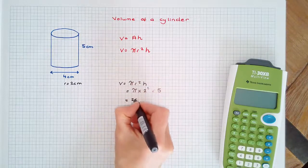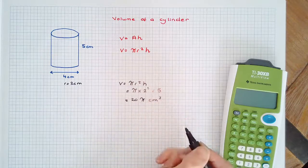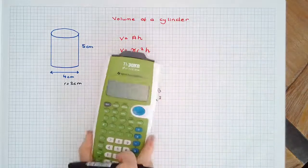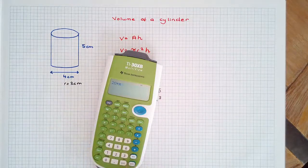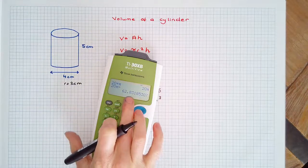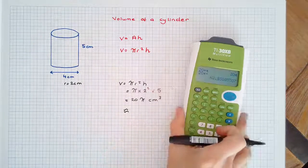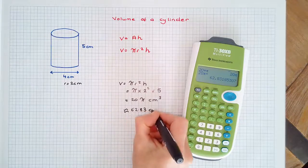If we're asked for an approximate value, we get our calculator. 20 times π is approximately, rounded to 2 decimal places, 62.83 cm³.